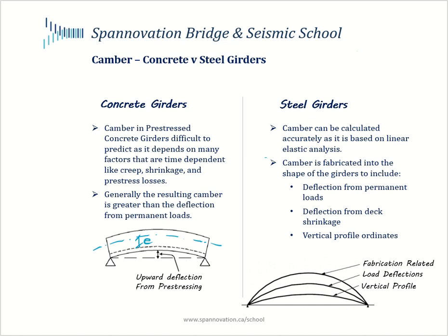The pre-stressing produces an internal stress state with much greater compression on the bottom and lesser compression on the top. You can also view this as a net negative moment on the beam from the pre-stressing. Because the pre-stressing has a constant eccentricity over the entire length, it produces a constant negative moment over the entire girder. There is a tutorial on our YouTube channel to brush up on pre-stressing basics. Because of this, there is a net upward deflection that the beam experiences — this is what we refer to as camber.